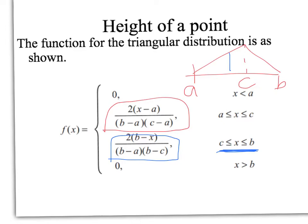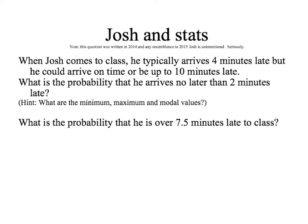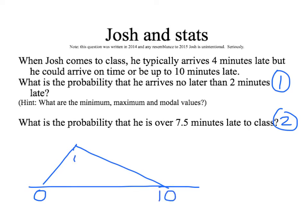We're going to solve a problem first using the formula, then using a similar triangle method that I prefer. So here's a question about Josh and stats. When Josh comes to class, he typically turns up four minutes late. But he could arrive on time, or he could be up to ten minutes late. So we want to find the probability that he gets to class no later than two minutes late. That's question one. Question two is what's the probability that he is over 7.5 minutes late to class? So the first step in solving these problems is to do a sketch. And it is worth making the sketch have a roughly accurate picture of where the mode is sitting. So you want to be drawing a triangle like this one here. Don't draw it like that or like that. It's not going to help you get a good handle on the problem. So make sure you draw it so that you're clearly showing that the mode is closer to this end than to this end.